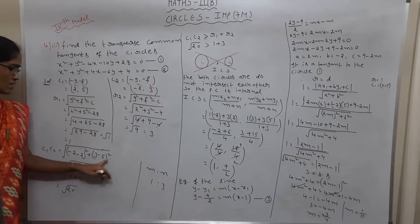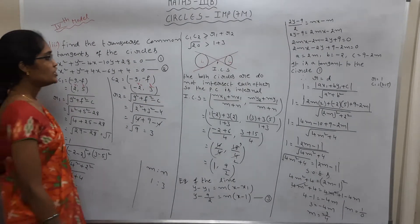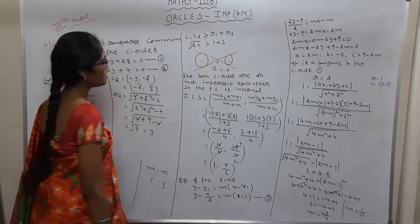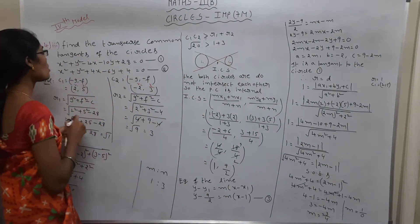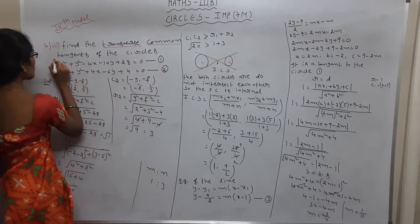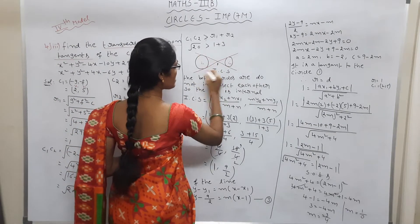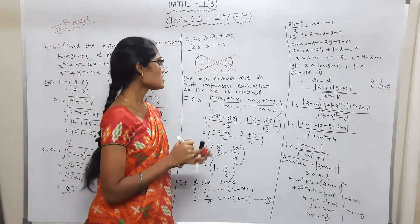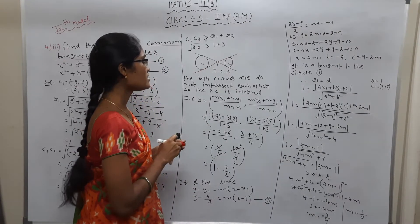Applying the distance formula with the given points, we get √20. Now checking the condition: c1c2 > r1 + r2, that is √21 > 1 + 3 = 4. This condition is satisfied, so the circles do not intersect each other.